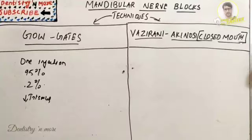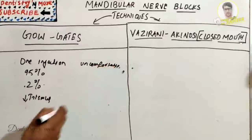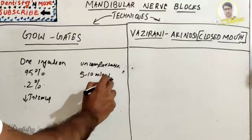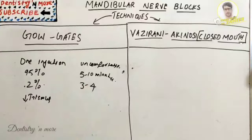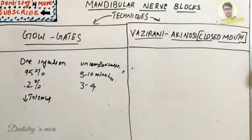The disadvantages include lingual and lower lip anesthesia, which may be uncomfortable for some patients. The onset of anesthesia is longer, taking five to ten minutes, compared to three to four minutes for conventional IANB. Additionally, significant clinical experience is required to learn this technique, as it is more complicated compared to the conventional IANB.